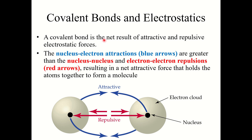Covalent bonds are formed because of the net result of the attractive and repulsive electrostatic forces. We have nucleus-electron attractions — this nucleus is attracted to the electrons from the other atom, and vice versa. Those attractive forces are greater than the repulsive forces from the two positively charged nuclei repelling each other, and from the negative electron charges repelling each other. The nucleus-electron attraction force is greater than the repulsion forces, resulting in a net attractive force that holds the atoms together to form a molecule. This is what forms covalent bonds.